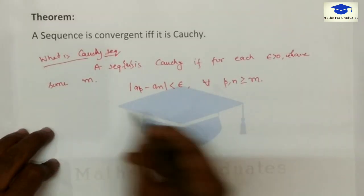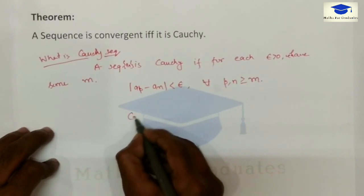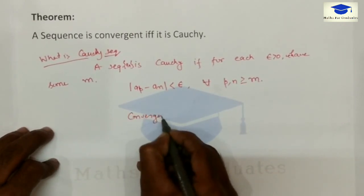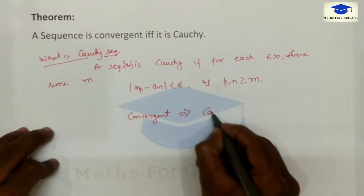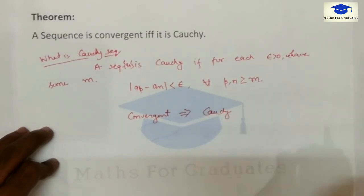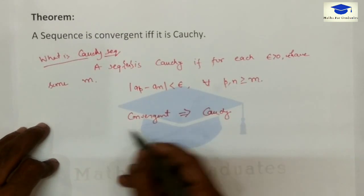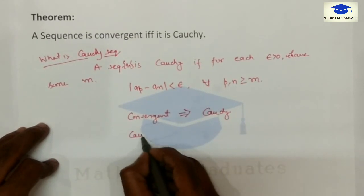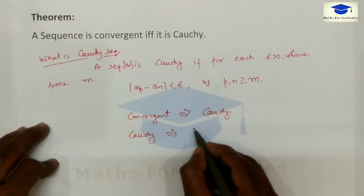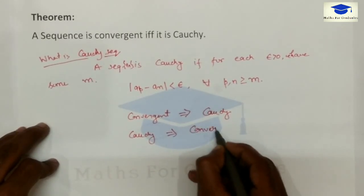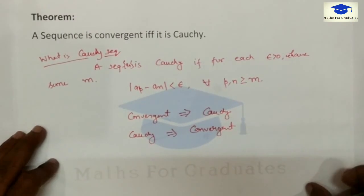First we will assume the sequence is convergent and then we will prove it is Cauchy. And in the second part we will assume the sequence is Cauchy and then we will prove the sequence is convergent. So let's start.